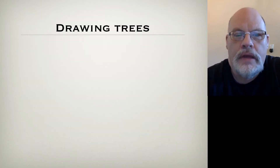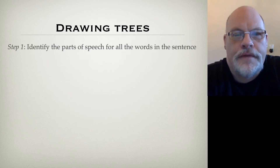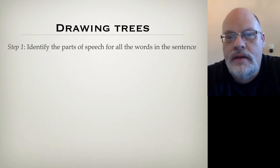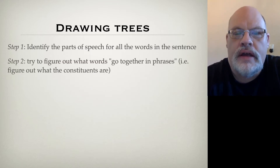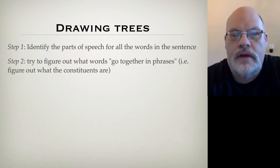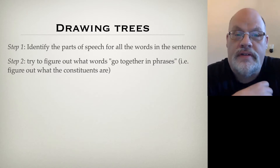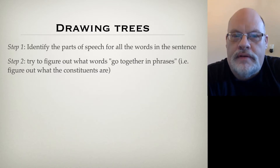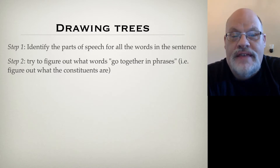When you're drawing your trees, the first thing you want to do is make sure you know the parts of speech for all the words in a sentence. And ideally, you want to mentally go through what words go with what other words in terms of constituents. You can use your constituency tests that you learned: movement, replacement, standing alone, ellipsis, modification relationships, conjunction, and see if words go together as constituents.